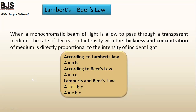According to Lambert's law, when a monochromatic beam of light is allowed to pass through a transparent medium, the rate of decrease of intensity with the thickness of the medium is directly proportional to the intensity of incident light. Therefore, according to Lambert's law, absorbance A equals a×b, where a is the absorptivity and b is the thickness of the cell.